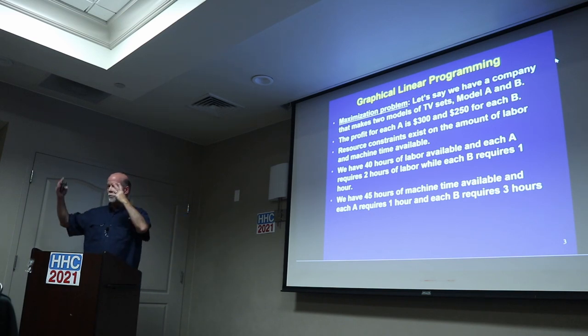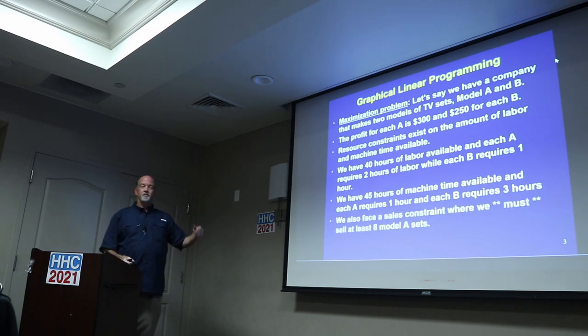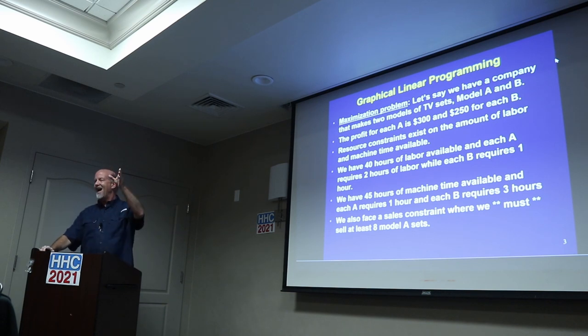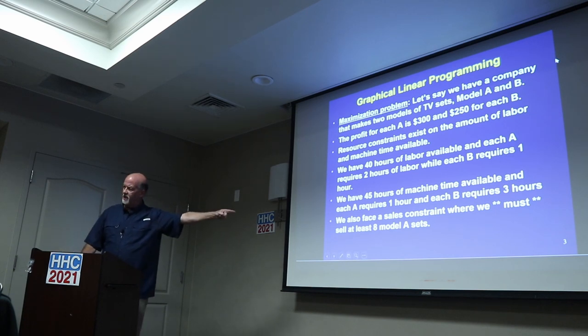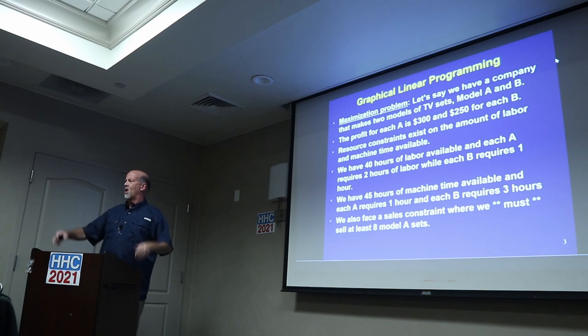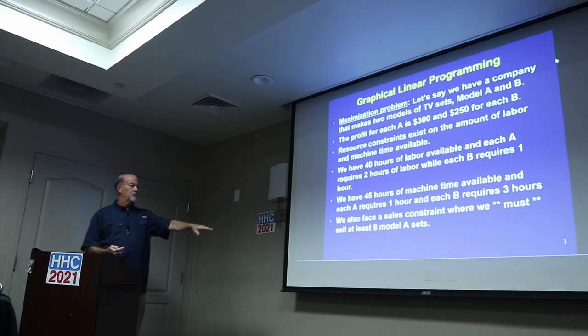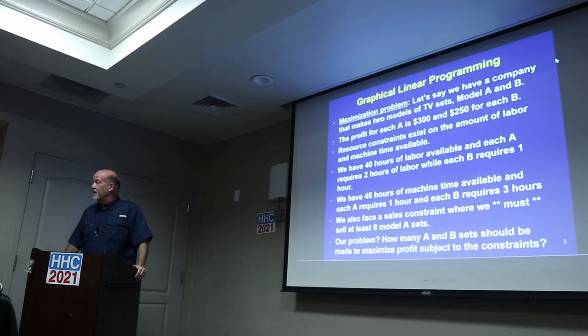Each A requires two hours of labor and each B requires one hour. You can't make 1,000 A's because that would use up all your labor time. Suppose there's 45 hours of machine time available and each A requires one, each B requires three. So less labor for B, but a lot more of the machine time. Unfortunately, you also have a sales constraint given by management. Management says you must sell at least eight Model A's. So the problem is, how many A's and B's are you going to make in order to maximize profit given these constraints?